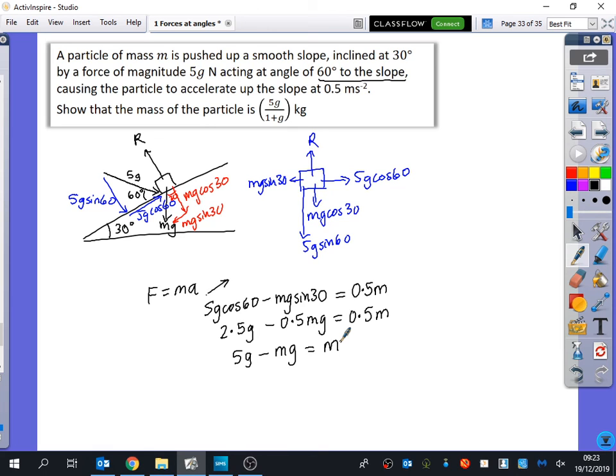Last stage that needs to be done or final stages. Rearrange, so I get 5G equals M plus MG. So 5G equals M, factorize this side, 1 plus G. So you get M equals 5G over 1 plus G. And the units of that is kilograms.